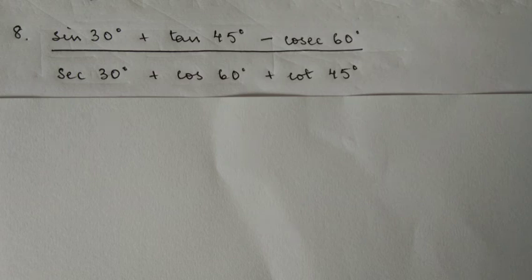Next question: sin 30° is 1 by 2, plus tan 45° is 1, minus cosec 60°. sin 60° is root 3 by 2, so cosec 60° is 2 by root 3. cos 60° is 1 by 2, and cot 45° is 1.